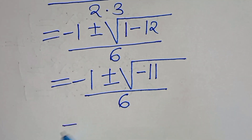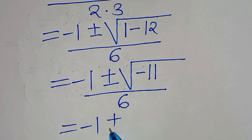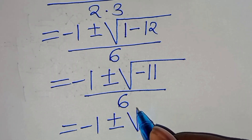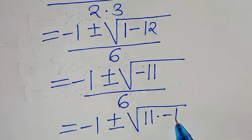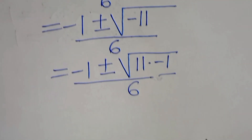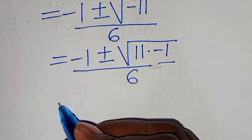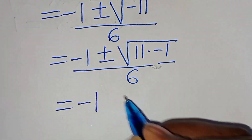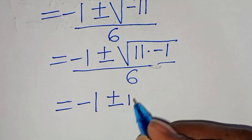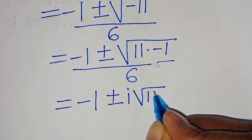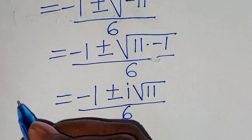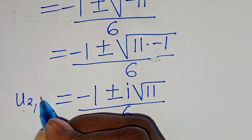Now, here we have minus 1 plus or minus — we can express the square root of minus 11 as the square root of 11 times minus 1, divided by 6. So, this implies that here we have minus 1 plus or minus — the square root of minus 1 is the same thing as i — then we have square root of 11, divided by 6. So, this is what u₂ and u₃ are.